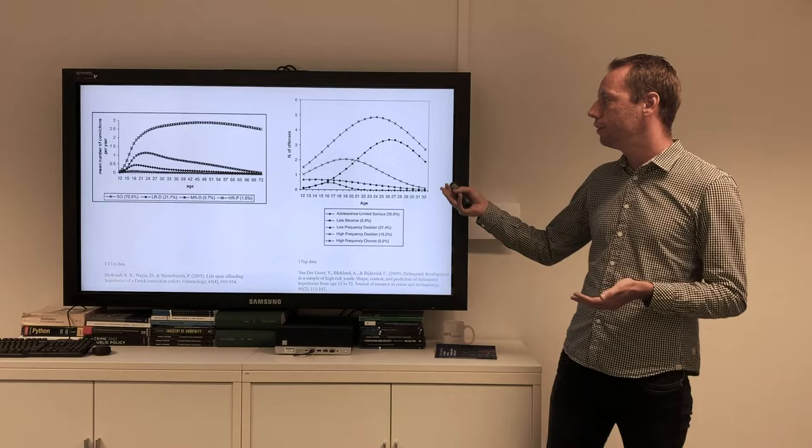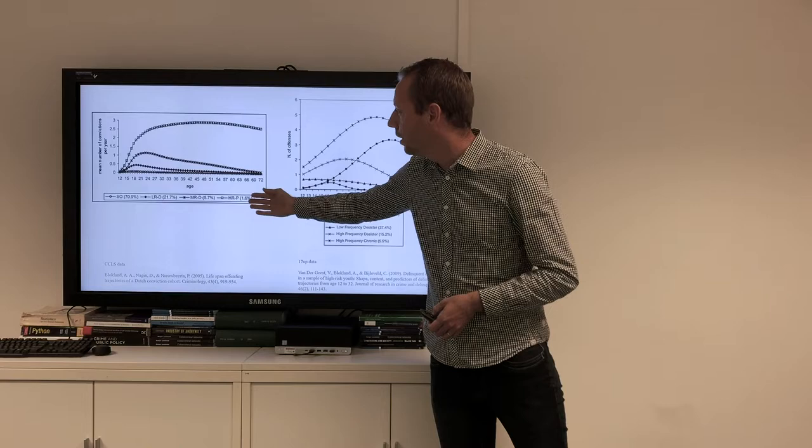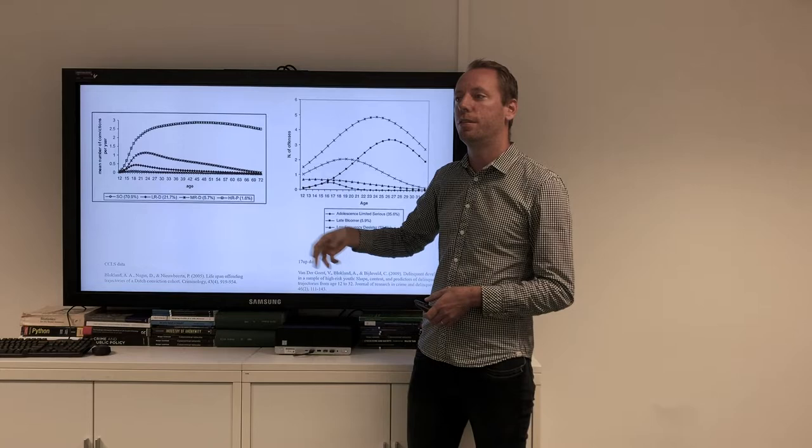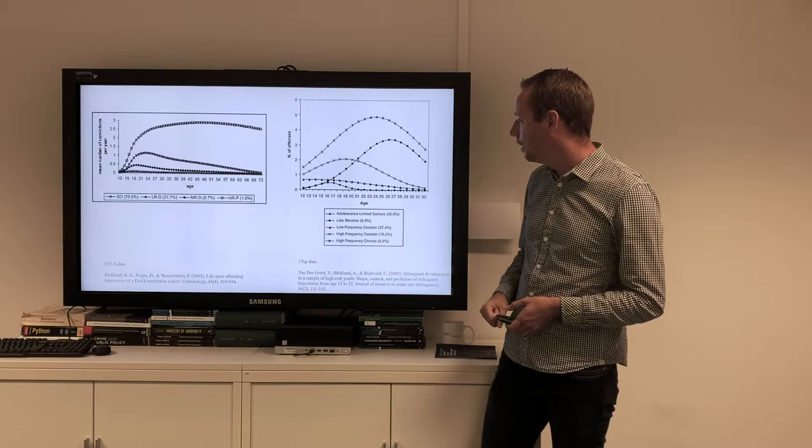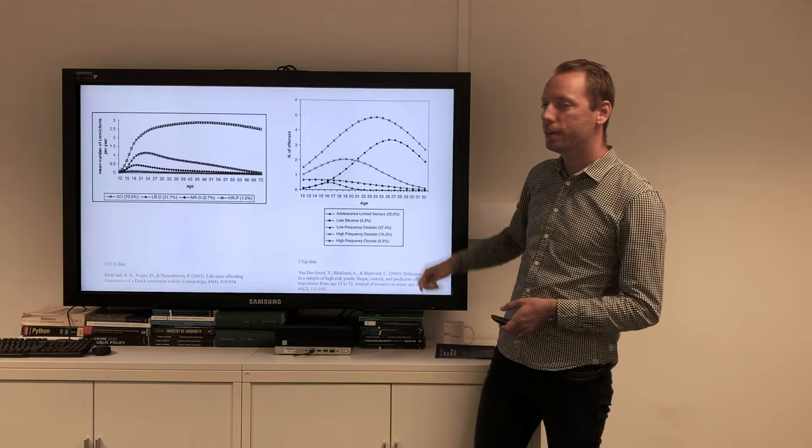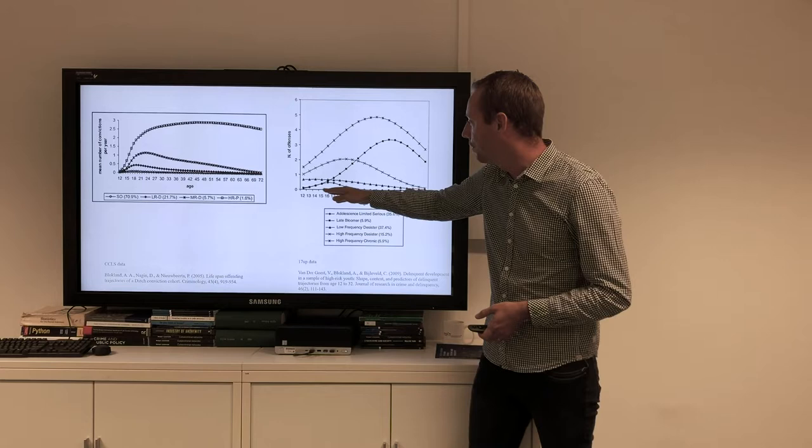In line with that theory, Terry Moffat's dual taxonomy theory suggests you can distinguish two types of criminals: adolescent-limited criminals who only offend temporarily during adolescence, and life-course persistent criminals who keep offending over the life course. Some studies indeed show you can make that distinction. These are two examples from the Netherlands.